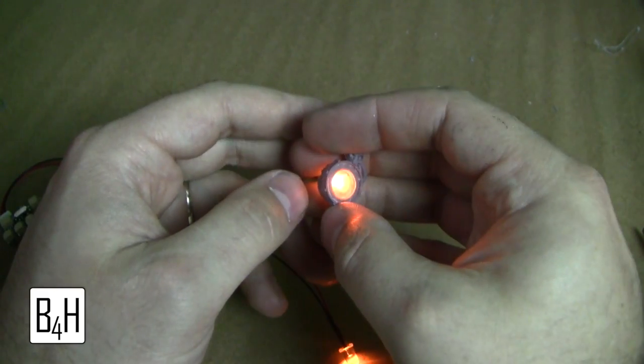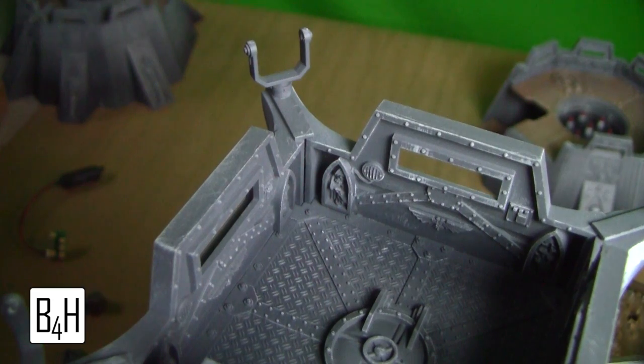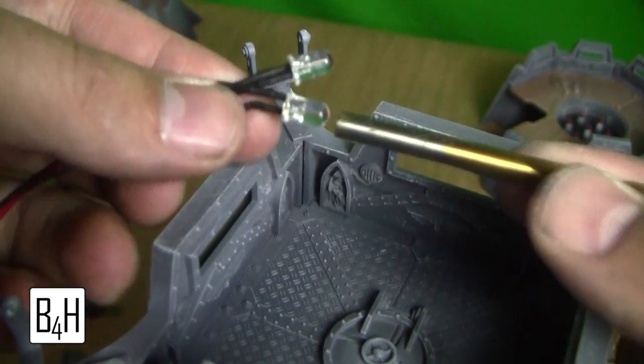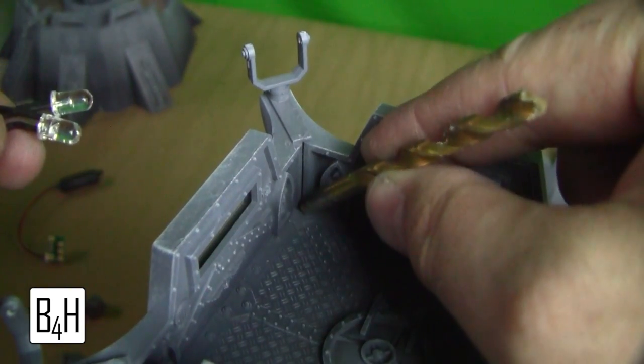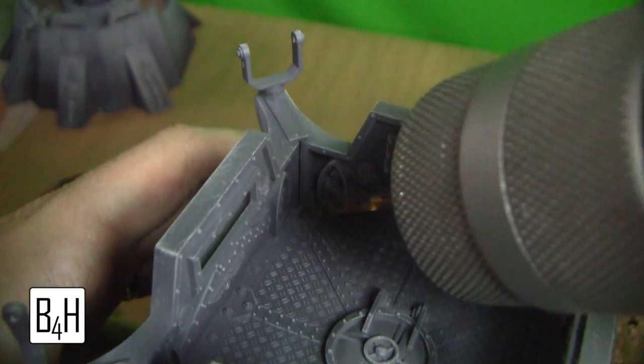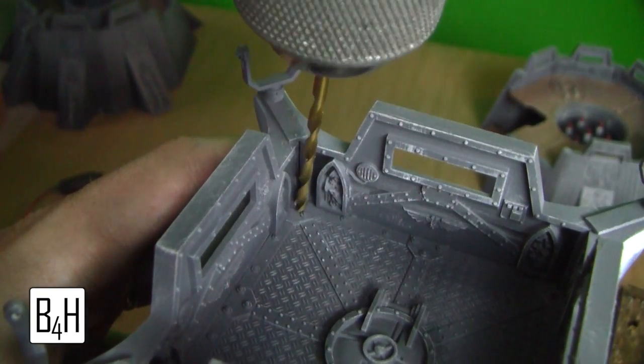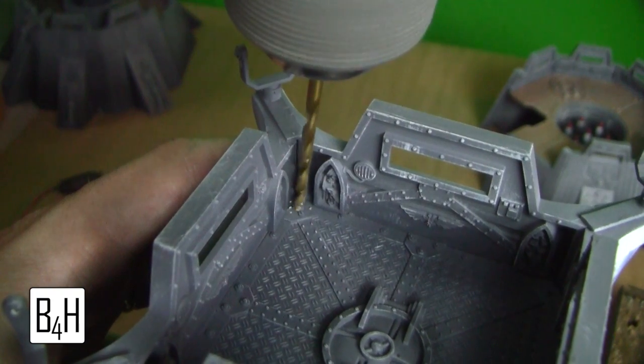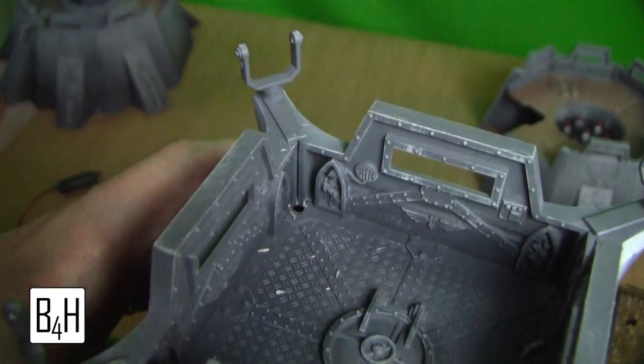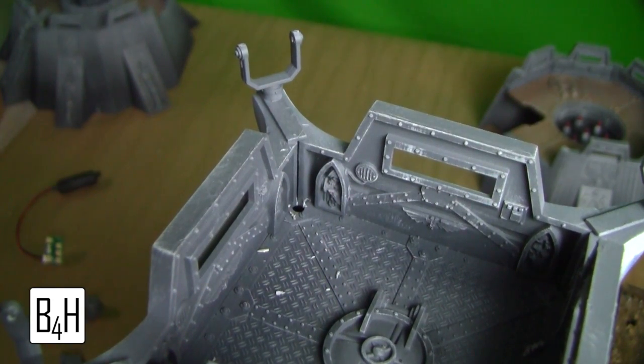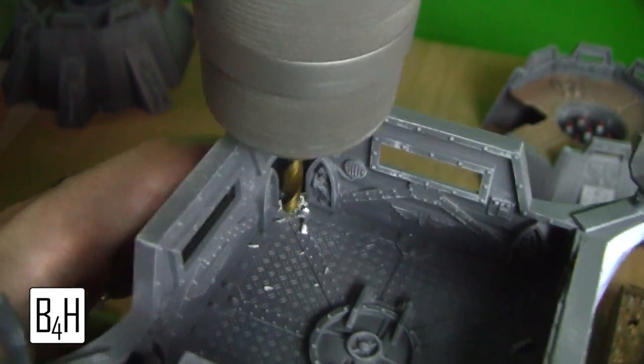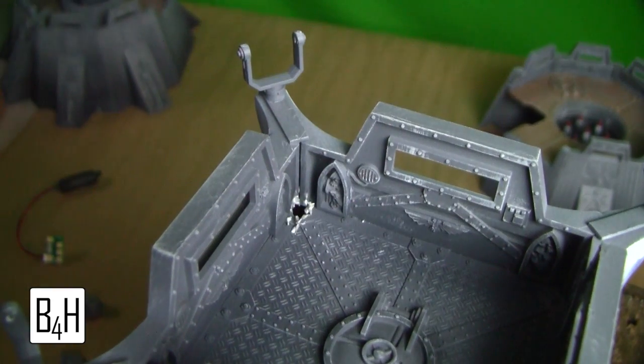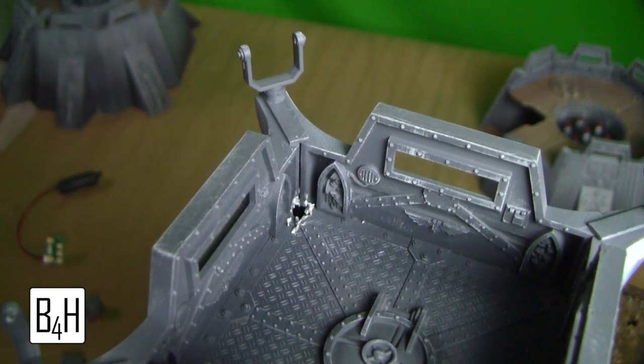Looking pretty good so far. And now we need to drill a hole large enough to slip the LEDs through. So we are going to start off in one of the corners here, just drill down through. And to be honest, this is a lot easier to do if you do this during the construction process, as opposed to after it is already painted. You just have to be careful not to paint over the clear parts that the light is coming through.